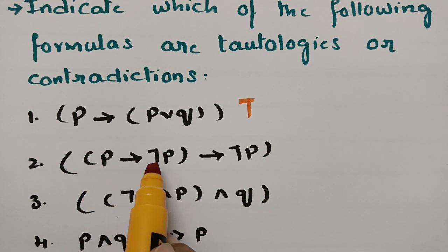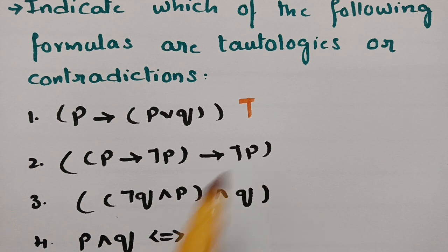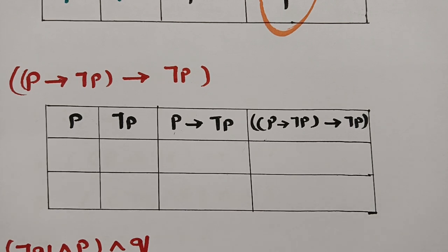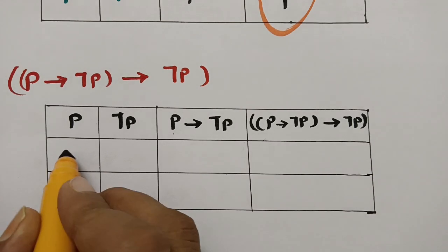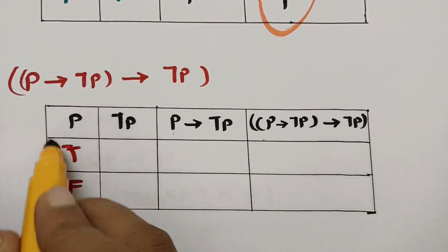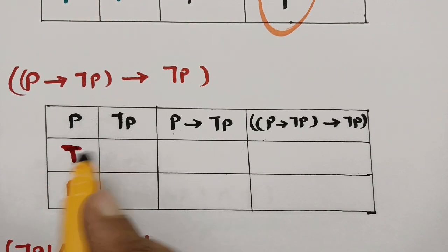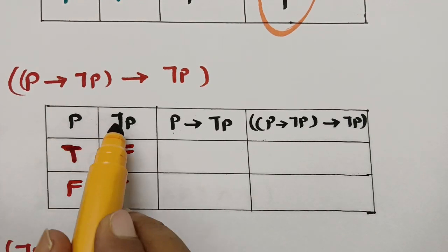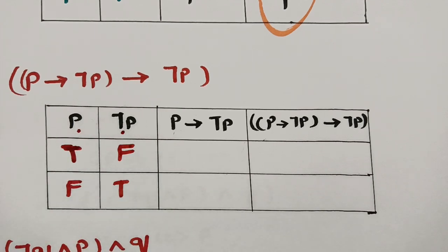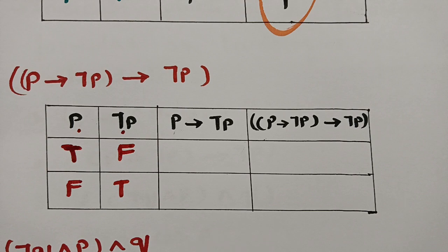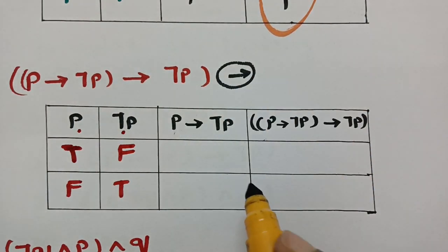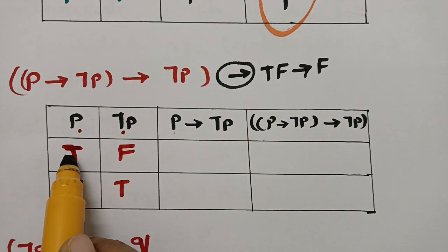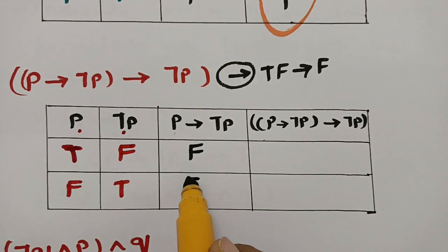The second formula is P implies (¬P implies ¬P). There is only one variable, so P is true and false. The negation of P: if it is true write false, if it is false write true. Between P and ¬P we apply implies. The rule: if it is true and false, immediately write false; otherwise true. So true-false gives false, and false-true gives true.